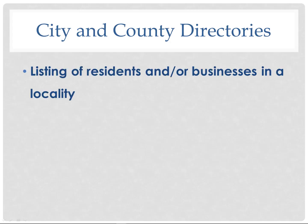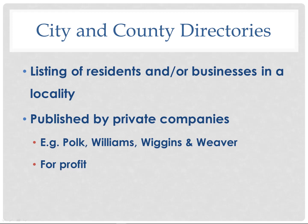City and county directories are first and foremost a listing of residents and/or businesses in a particular locality. They were published by private companies — for example, Polk, Williams, and Wiggins and Weaver — and they were published for a profit. So they were private companies trying to make money by selling the directories and selling advertising in them. As with any record used in genealogical research, it's important to know why and how the record was created.